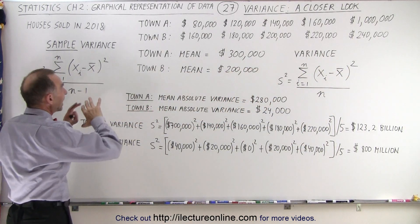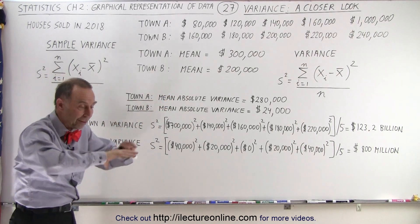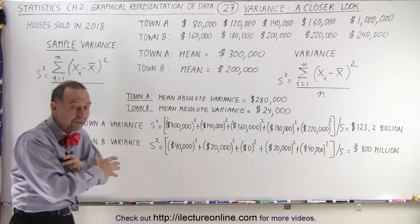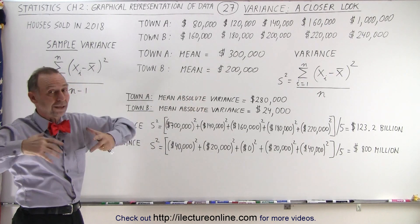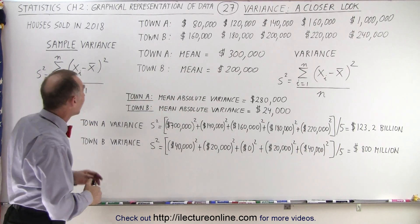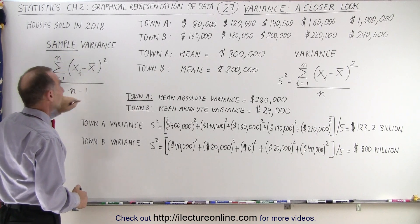However, if we take a sampling, let's say this were just five houses sold, a typical representation of five houses out of a total population of a big city, let's say a thousand houses were sold and at random we just grabbed five houses, then we do a sample variance and then we have to divide by n minus one.